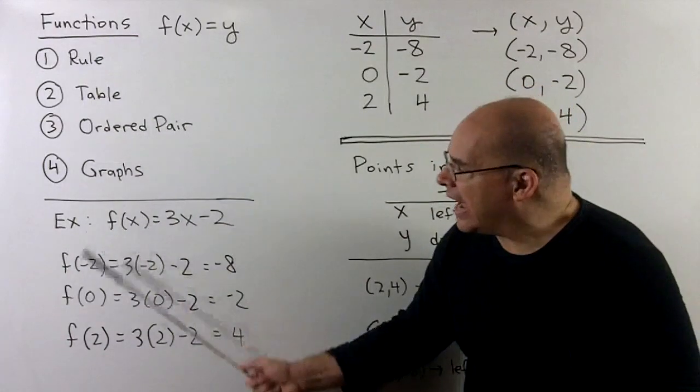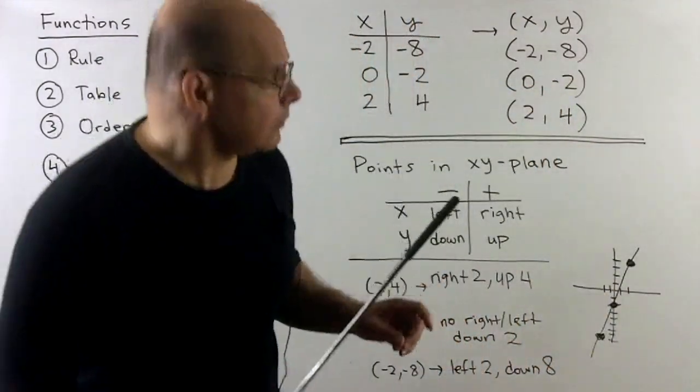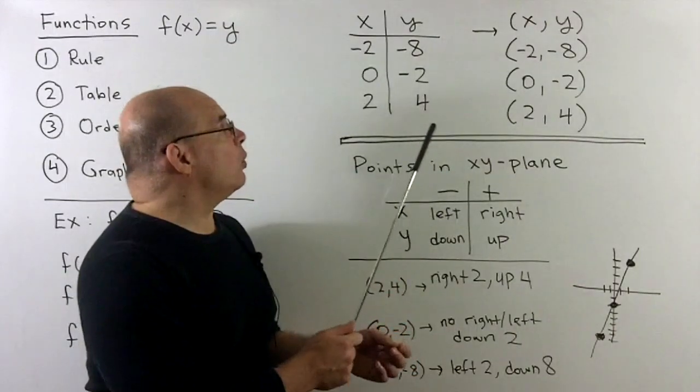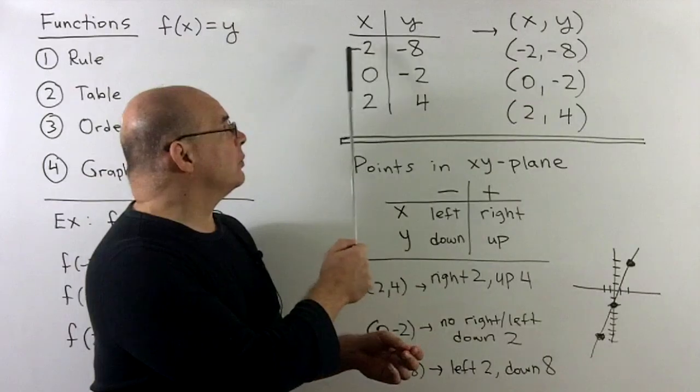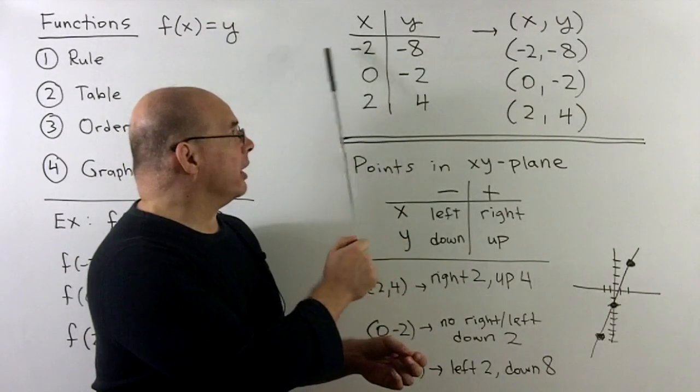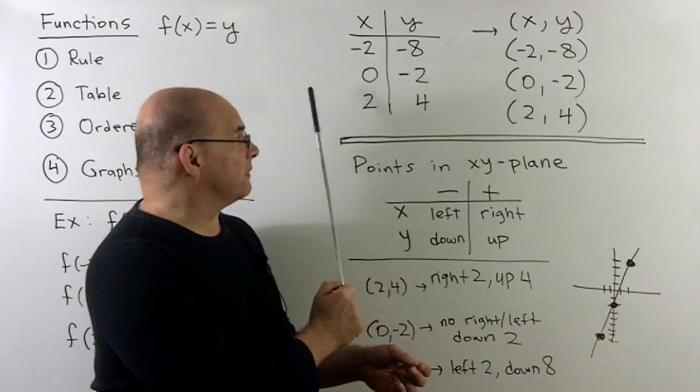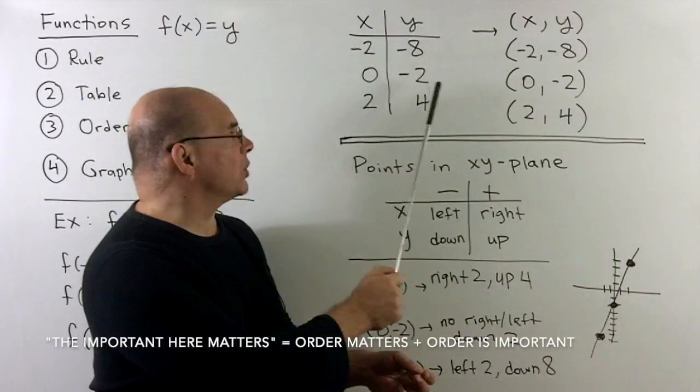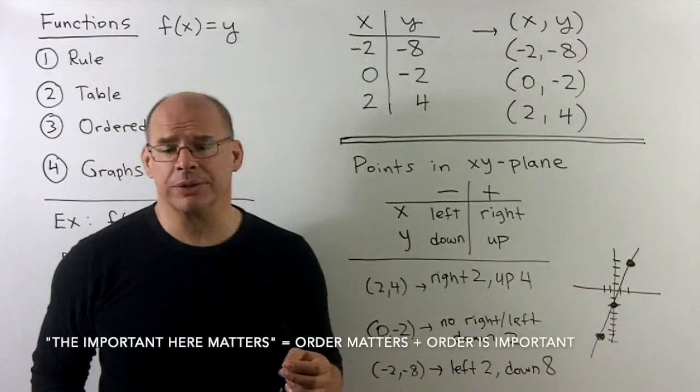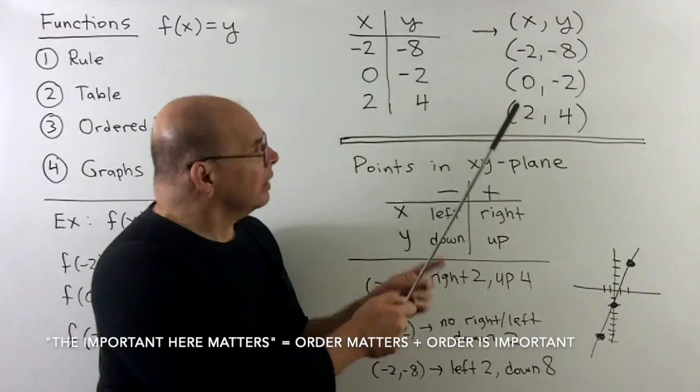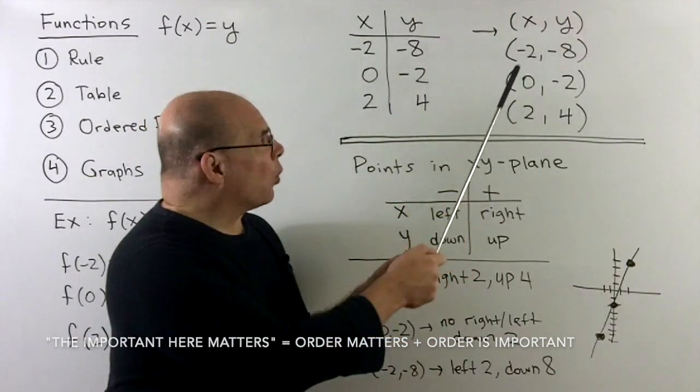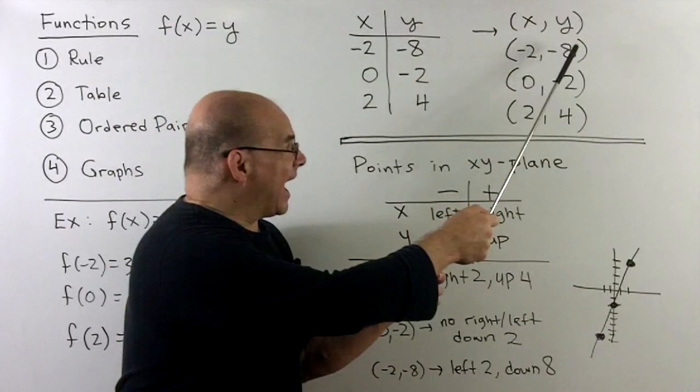We could table these three points. Recall for the table, we'll have two columns, x and y, and then each row gets one of the data points that we just found. Once we have that, we'll convert each row to an ordered pair, x comma y, or input and then output.